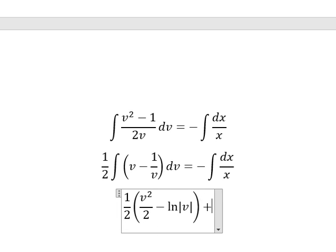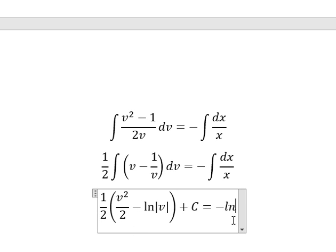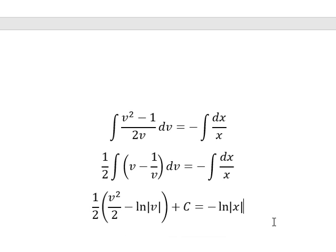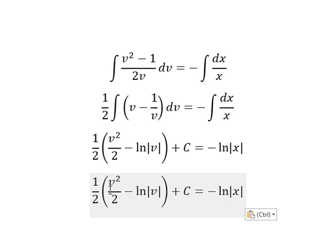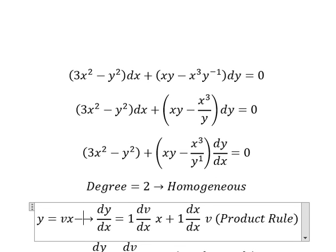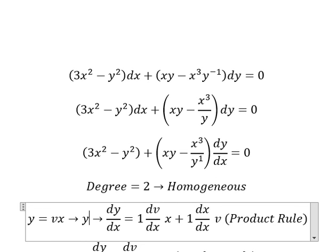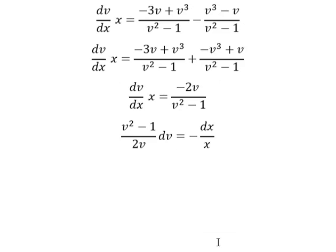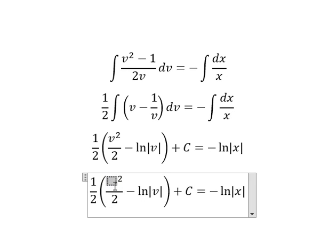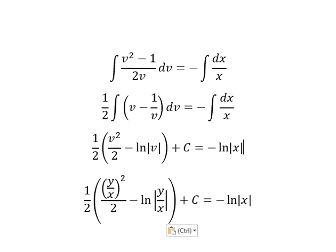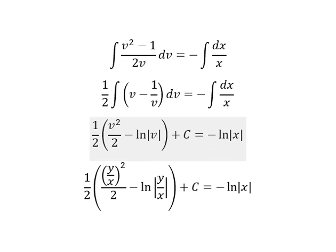We add constant C. Then we divide both sides by x and substitute v back as y over x. This is the final answer. Thank you for watching.